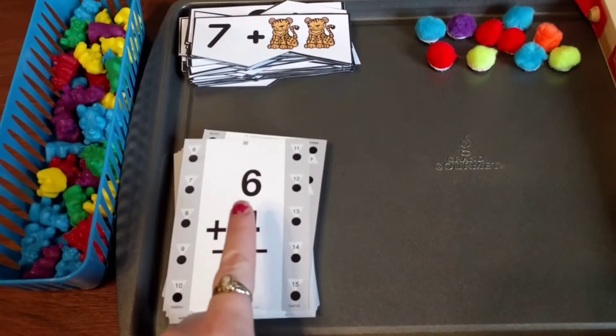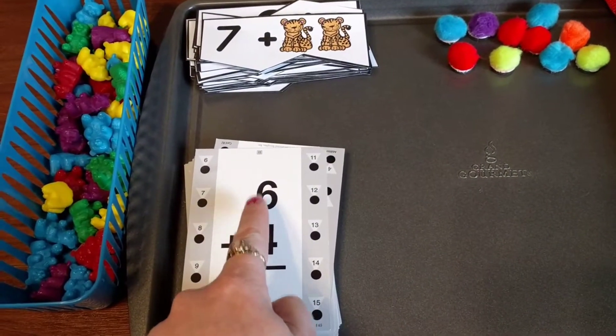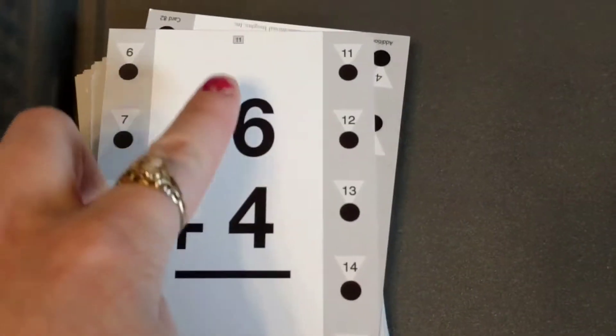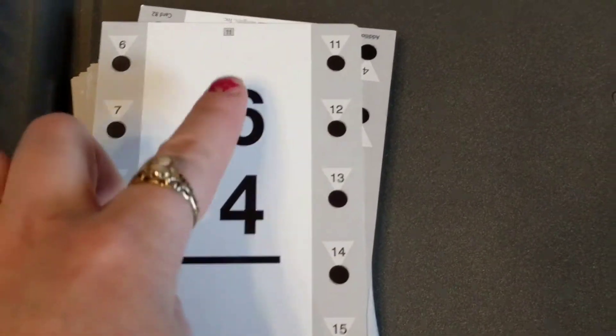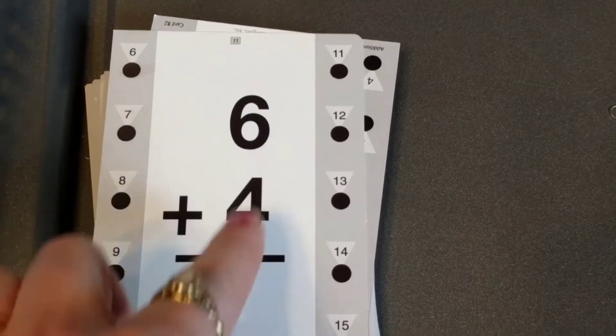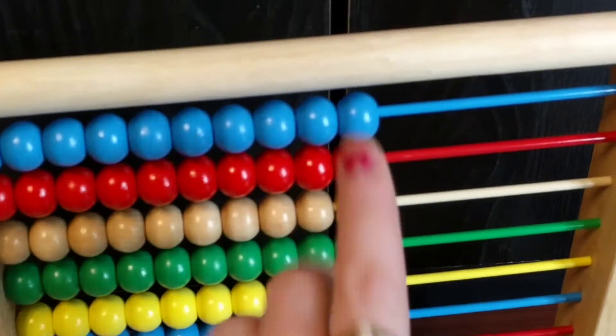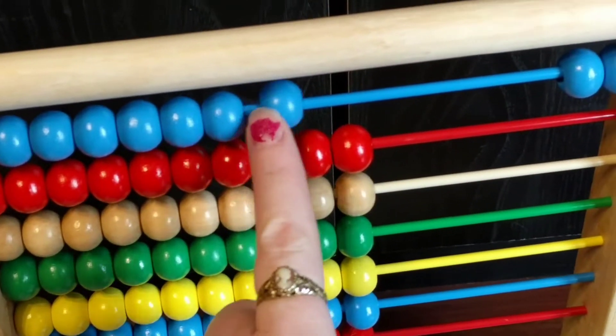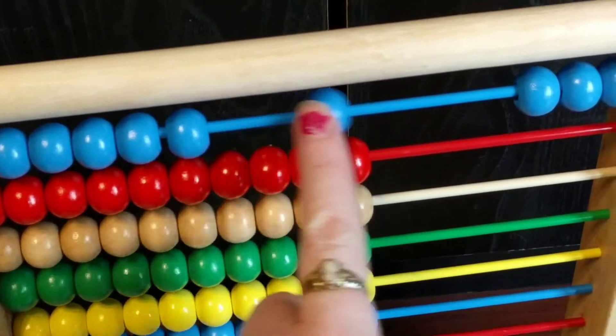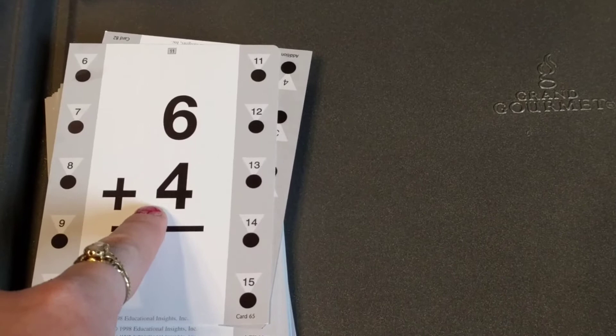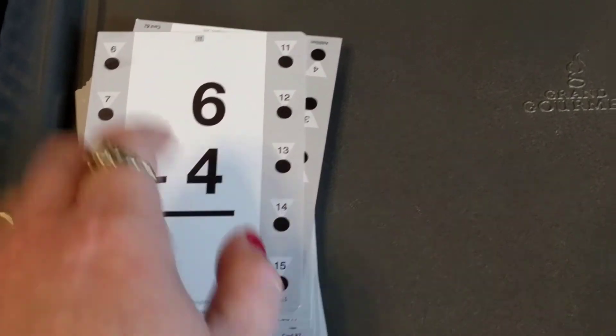So if I already have 6, I tell the kids just say the bigger number first. So I already have 6, I'm going to add on 4 more. So 6 plus 4 more. I'm just going to count 4 more. So on the abacus I just have them count 4 more: 7, 8, 9, 10. So 6 plus 4 equals 10.